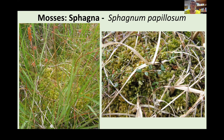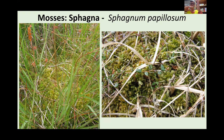Sphagnum are really important — they are called ecosystem builders. They have dead cells inside them that hold onto water, and by holding onto water and keeping the water table high, they effectively create their own ecosystem. As the plant grows up, the bottom never decays because it's submerged in water and can't decompose aerobically. So sphagnum effectively creates peatlands and bog, and is extremely important from an ecological perspective.